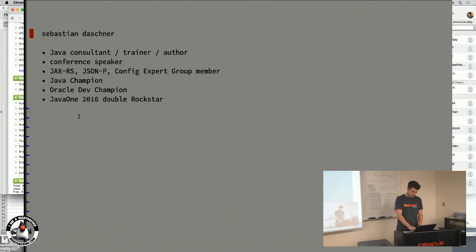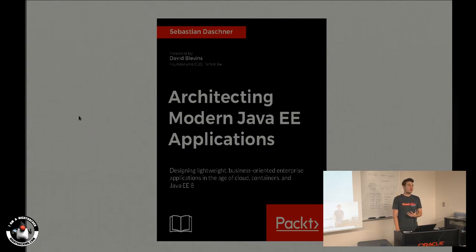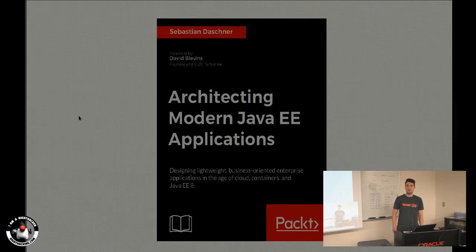Last year I wrote a book called 'Architecting Modern Java EE Applications,' which is basically an introduction to how you build Java EE applications in a modern way — how to do it in 2017 or 2018 in terms of containers, cloud native technology, Kubernetes, and all of these things that Edson introduced just now.